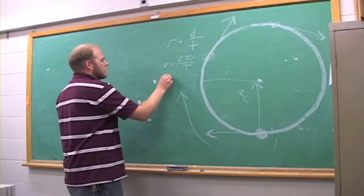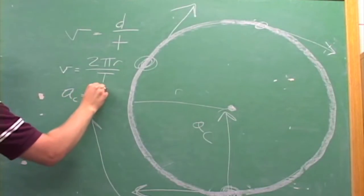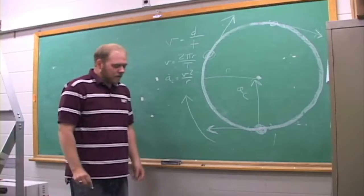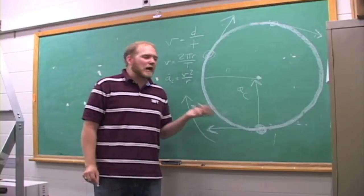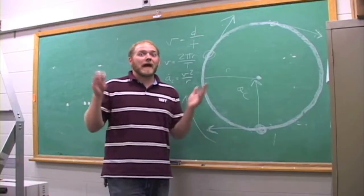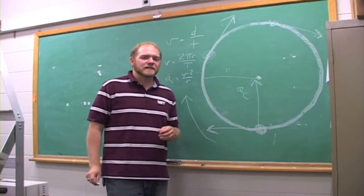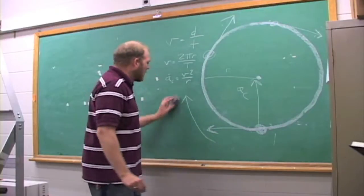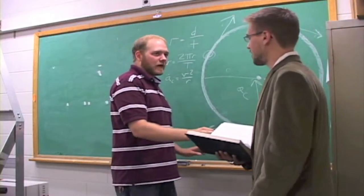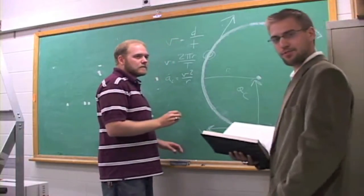The magnitude of this centripetal acceleration is equal to the instantaneous velocity squared divided by the radius. We have to have something that changes its velocity and creates the acceleration. It doesn't just magically happen. We have to have a force that does the work for us. This force is called the centripetal force.